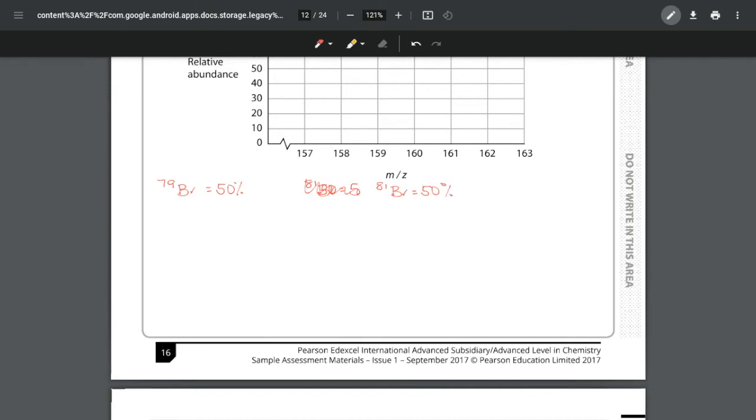In other words, I have a one in two chance of picking out a 79 as I do an 81. Now I'm going to look at the different combinations. I can get two 79s being selected, and the chances of that are one in two times one in two, which gives me a one in four chance or a quarter.